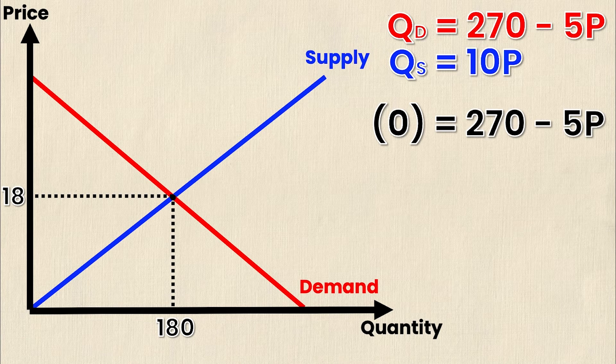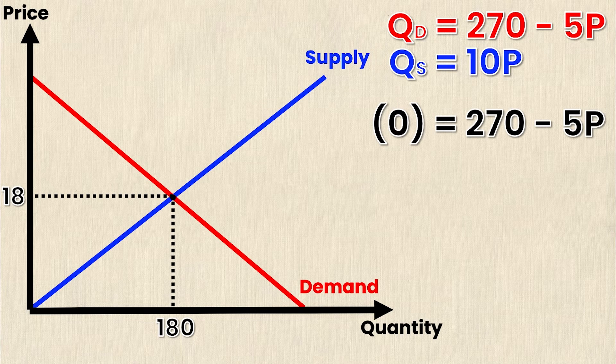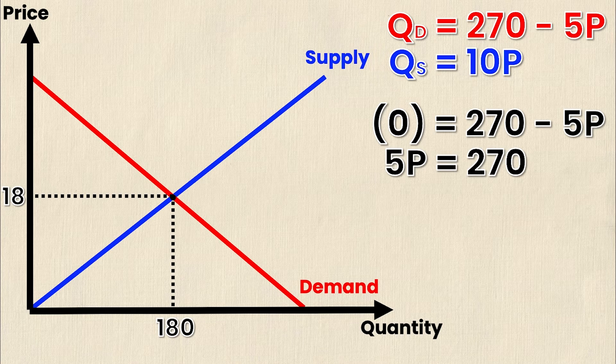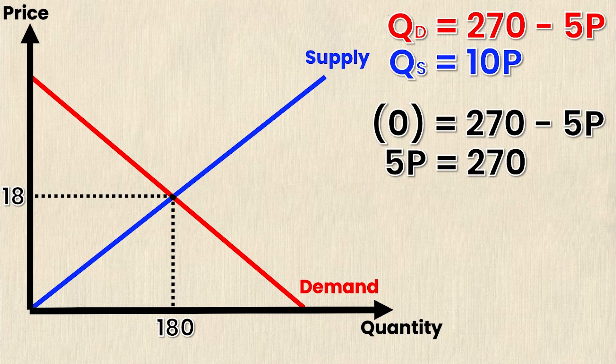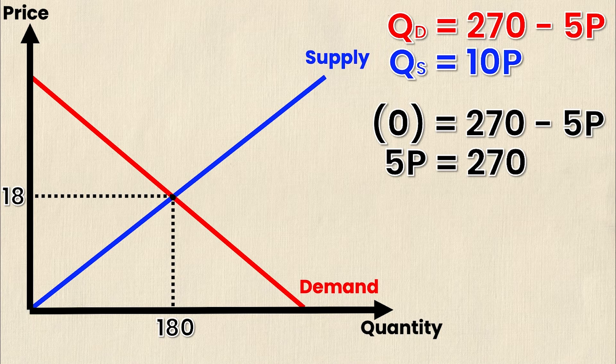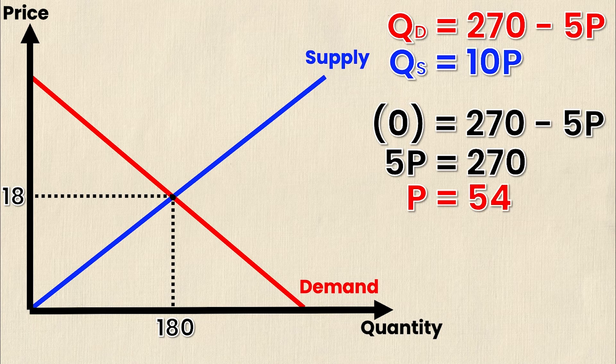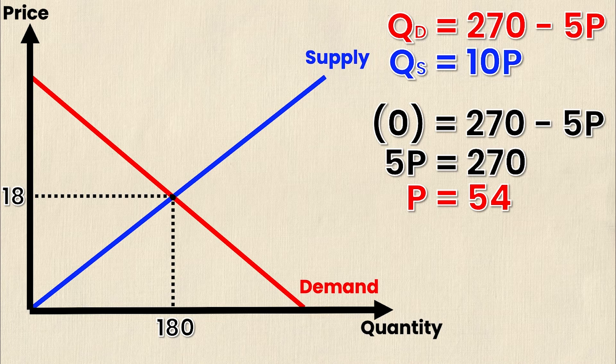So subbing in zero for Q I get zero is equal to 270 minus 5P. Rearranging I get 5P is equal to 270 and then finally isolating for P I get a P value of 54. So that is my P intercept for the demand curve.